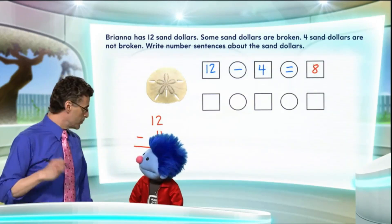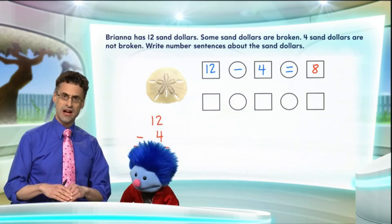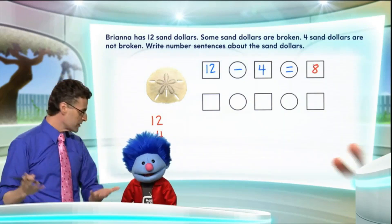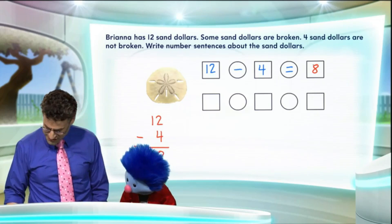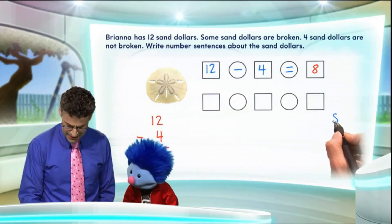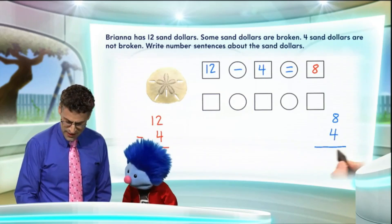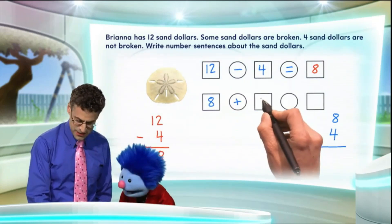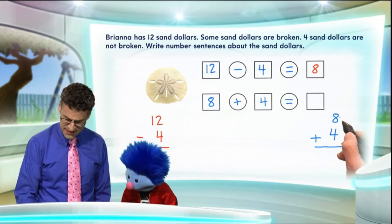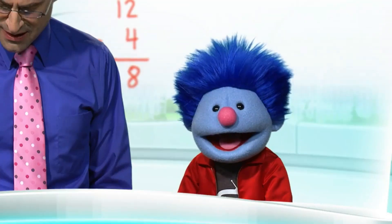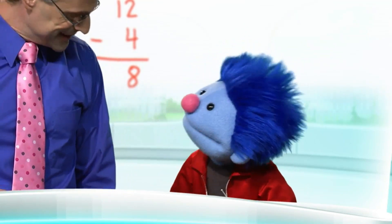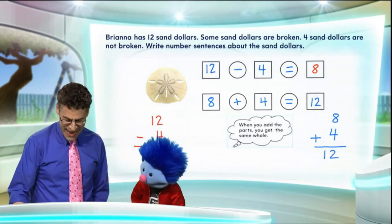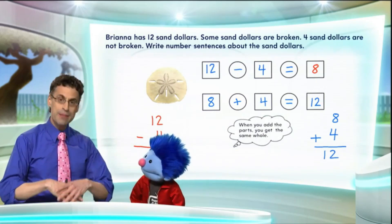And we can actually check our work, because one thing we can do is we can add the two different types of sand dollars — the broken ones and the unbroken ones — and when we add them together, all told, we should get the total number, which is 12. Let's do that! Let's try it really fast. So let's take the eight that were broken and the four that are not broken, and when I now add them — taking the eight and adding it to the four, plus the four — that will equal... eight plus four works out to be twelve! Exactly! Hey, it all checked out! It checked out perfectly. And here's the thought I want us to have: when you add the parts, you get the same whole.